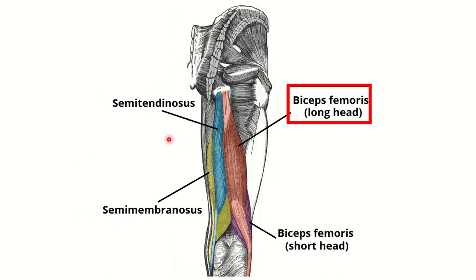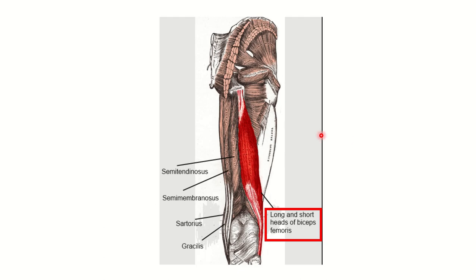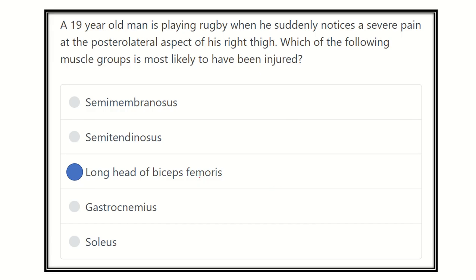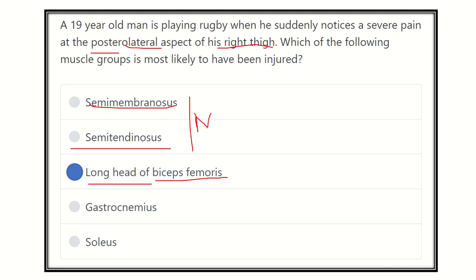Semimembranosus and semitendinosus are also posterior thigh muscles, but they are located medially. In another view, we can again see the long head of the biceps femoris located at the lateral part of the right thigh. So the answer is clear: the long head of the biceps femoris is located in the posterior and lateral part of the thigh. The gastrocnemius and soleus are muscles of the leg, not the thigh.